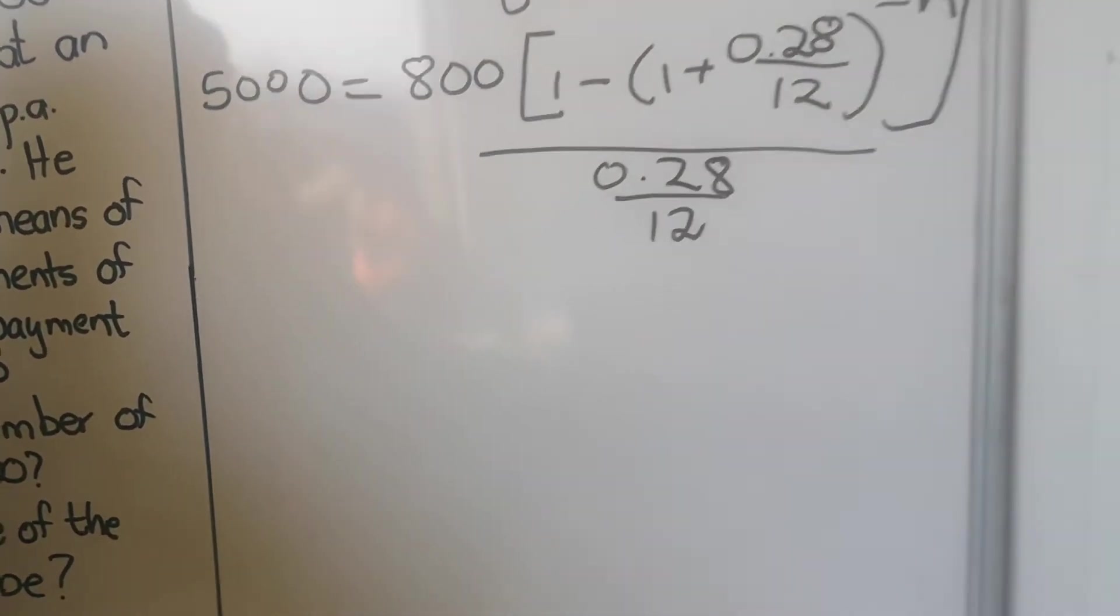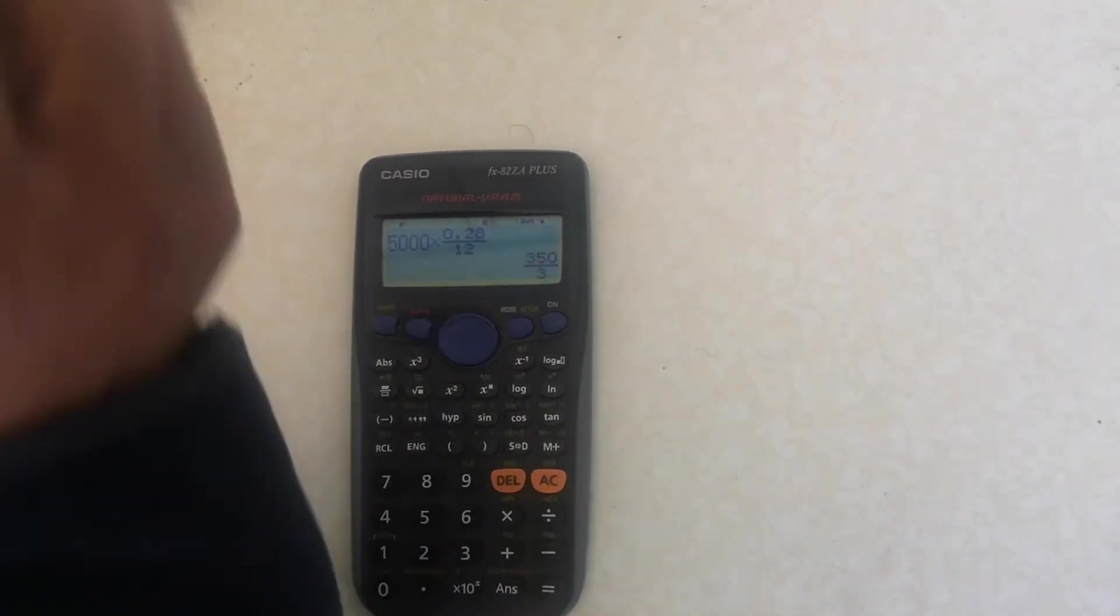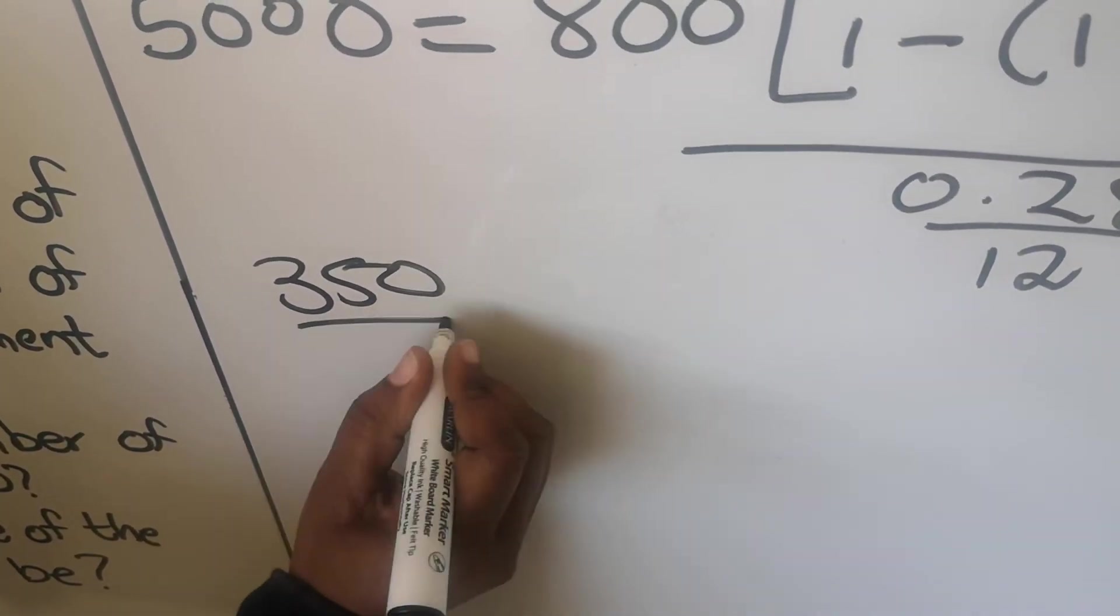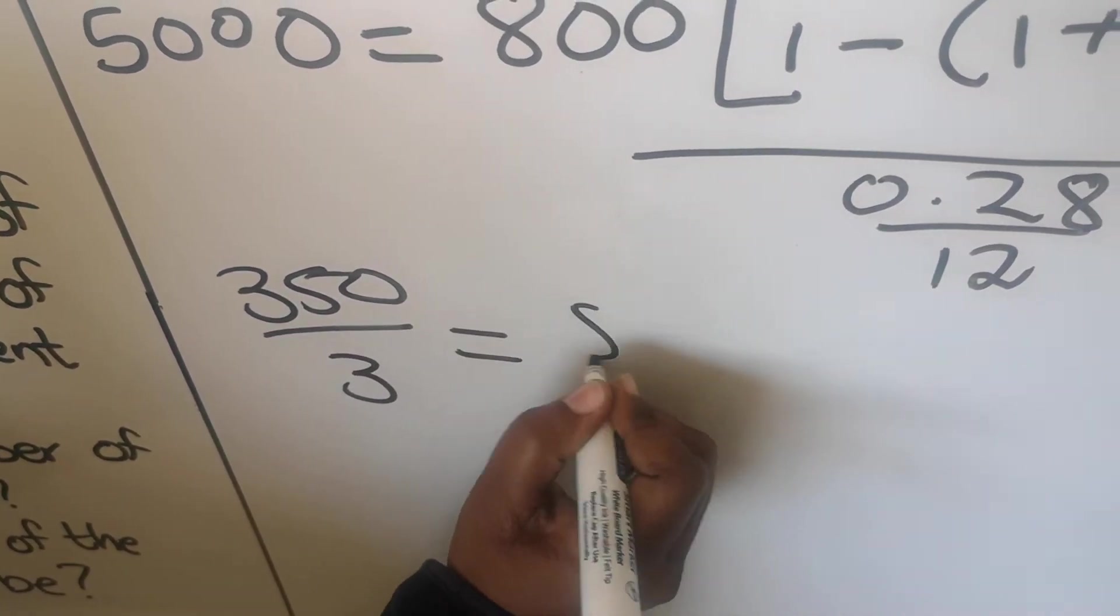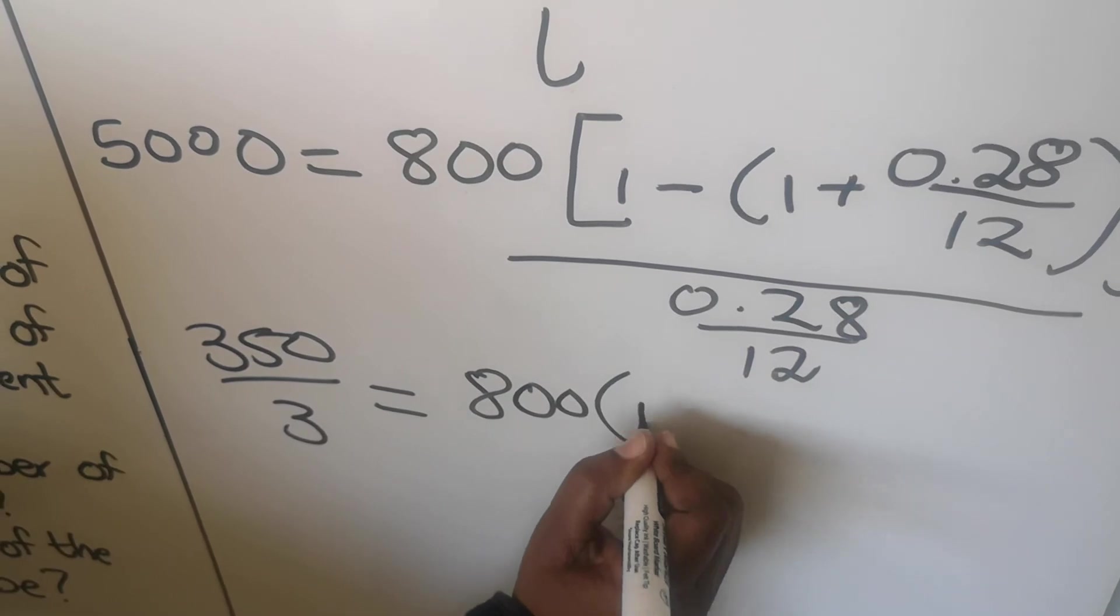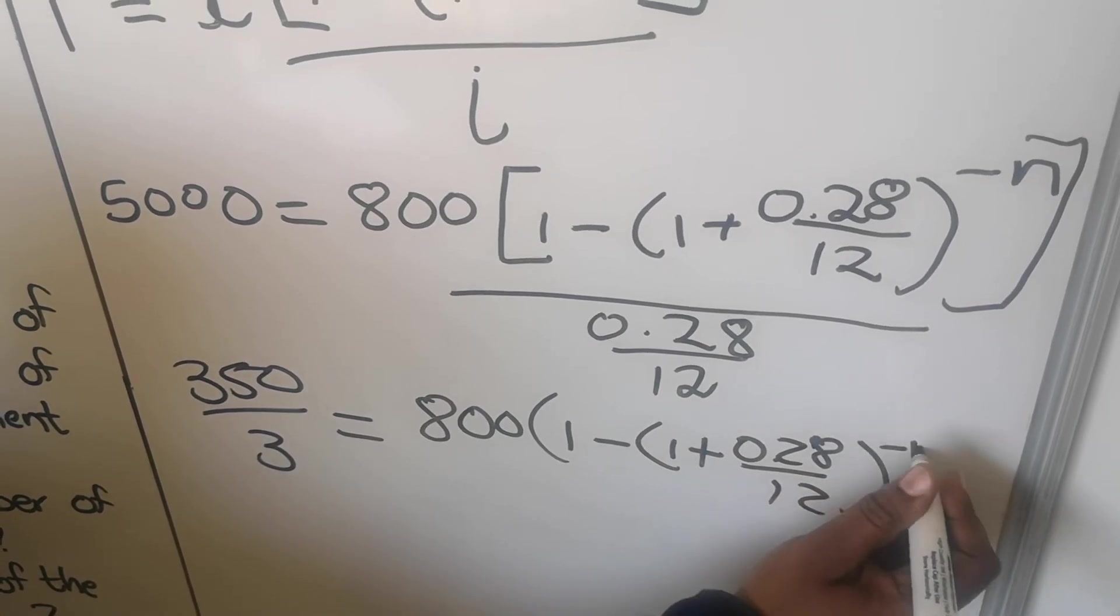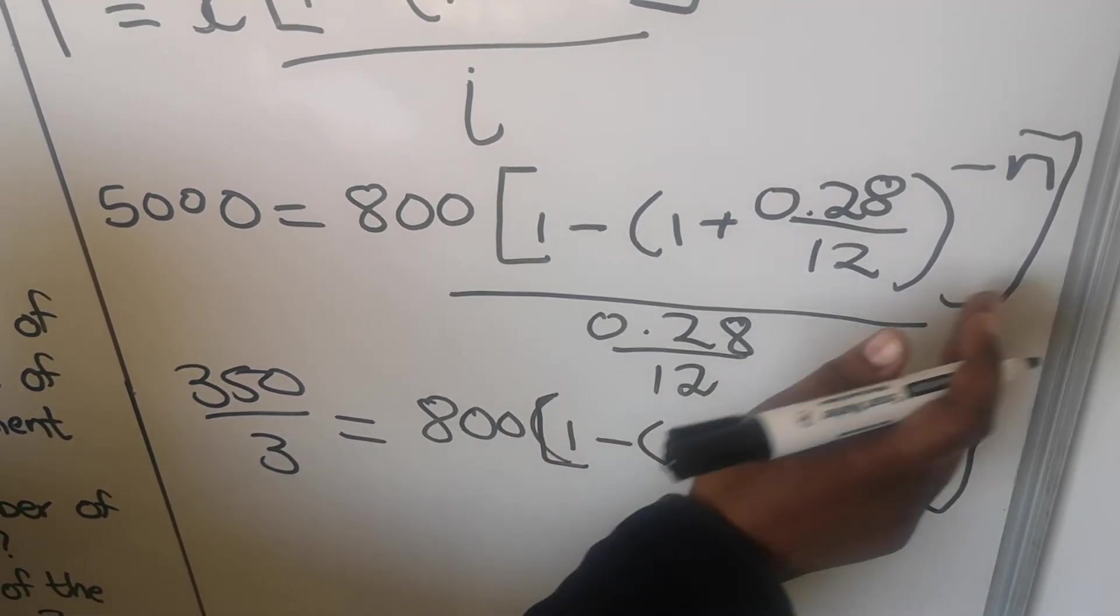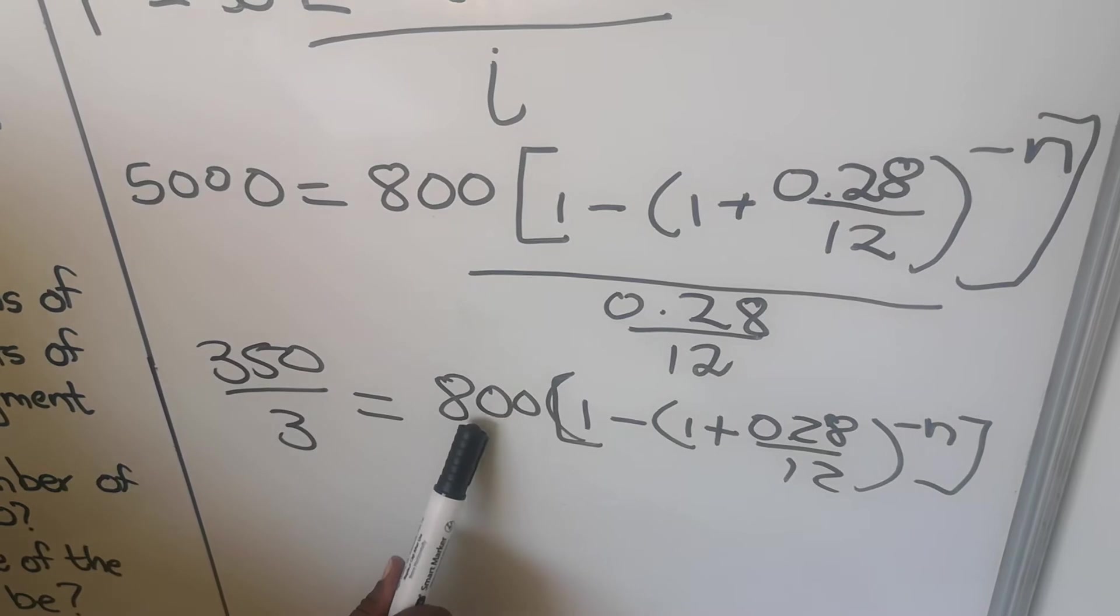So leave it as a fraction. I'll have 350 over 3. Then here I'll be left with 800 into 1 minus 1 plus 0.28 over 12 to the power minus n. The next thing I must get rid of the 800, so I'm going to divide by 800 both sides. So I have the 350 divided by 3, then divide by 800. So now I have 7 over 48.